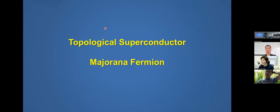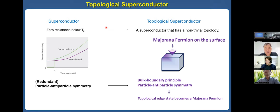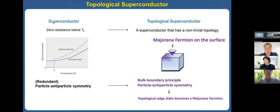Let's discuss the topological superconductor and Majorana fermions. Before discussing the topological superconductor, I will briefly introduce the superconductor, which is a very interesting material that shows zero resistance below Tc. It actually has a particle-antiparticle redundancy in its description.